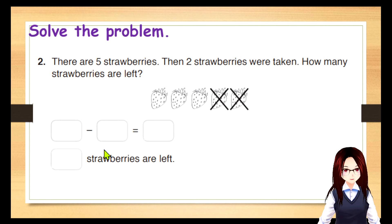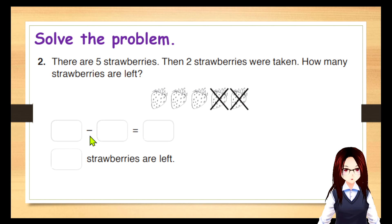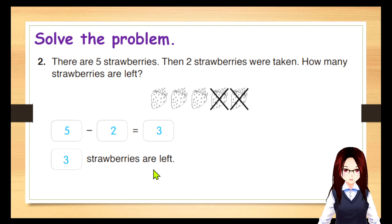Next, solve the problem: There are five strawberries. Then two strawberries were taken. How many strawberries are left? So, again, we have our number. Let's fill this out: blank minus blank equals blank. What do we put here? Five. Five minus two equals three. The answer is three strawberries are left.